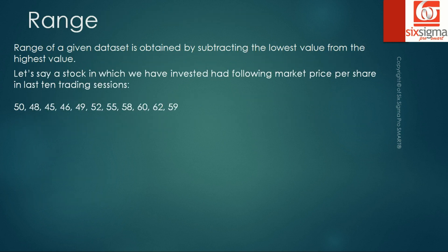Range of a data set is obtained by subtracting the lowest value from the highest value. Let's say a stock in which we have invested had falling market price per share in last 10 trading sessions. If we arrange our data in ascending order, the smallest value is 45, the largest value is 62, therefore the range is 62 minus 45 equals 17.